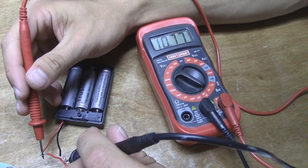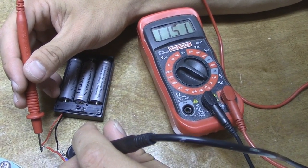Here we are using a multimeter to test the voltage and we're getting about 11.5 volts out of the battery pack.